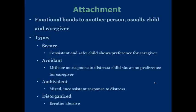Avoidant attachment is when there is little or no response to distress. Children in this situation will generally not show a preference for the caregiver. Ambivalent attachment is when there is mixed, inconsistent responses to distress, and the responses that a child will display will vary. Disorganized attachment is erratic and abusive, and the child will generally avoid the caregiver.